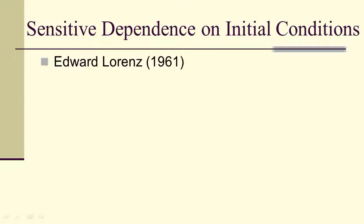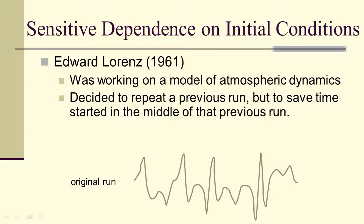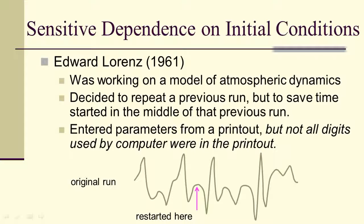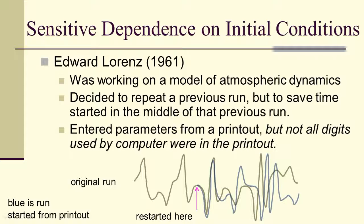Sensitive dependence on initial conditions is pretty easy to understand, and that's what was discovered in 1961 by Edward Lorenz. Working on a model of atmospheric dynamics, he decided to repeat a previous run, but he wanted to start in the middle. He restarted after the original run, but he had a printout, so not all the digits were printed out, and so he didn't have as much accuracy in his restart as he did in his original. And what he saw was that even though the new run started out close to the original, very soon they were completely different. This was sensitive dependence on initial conditions.